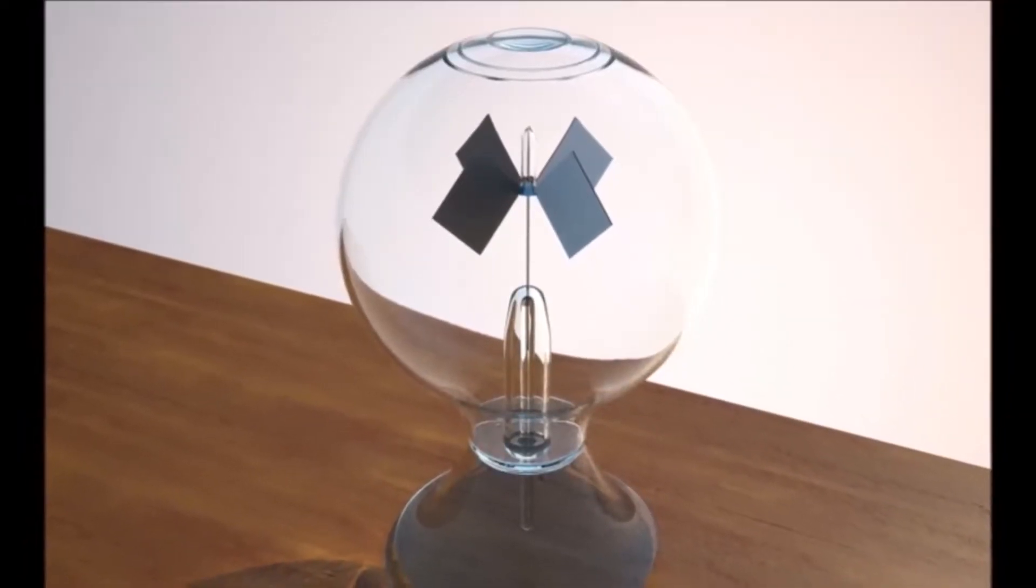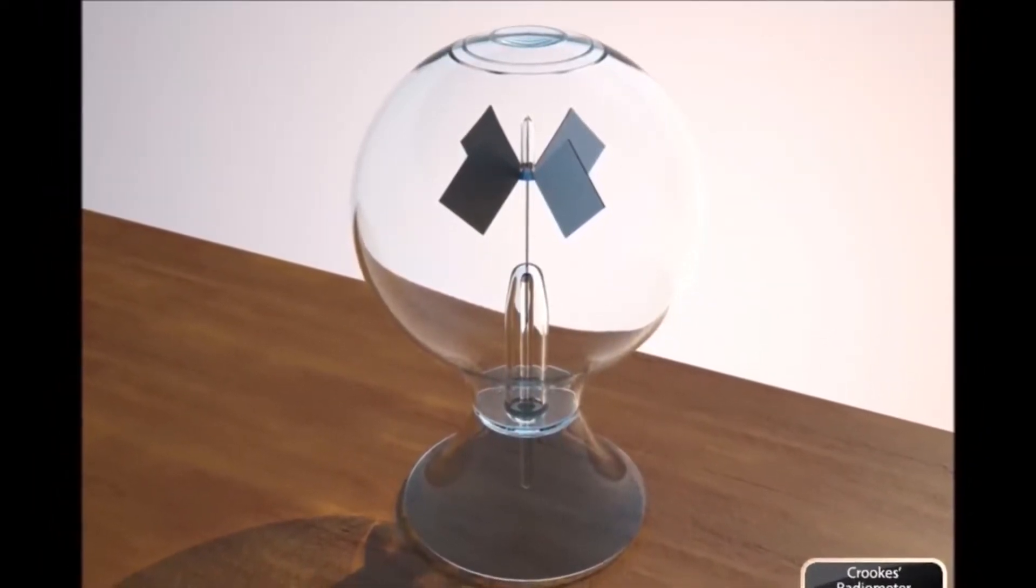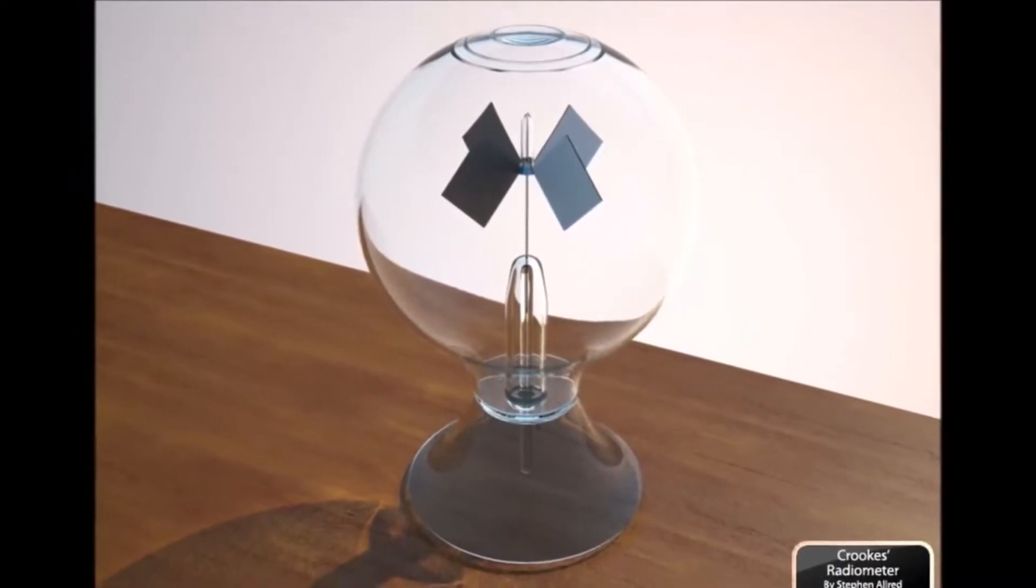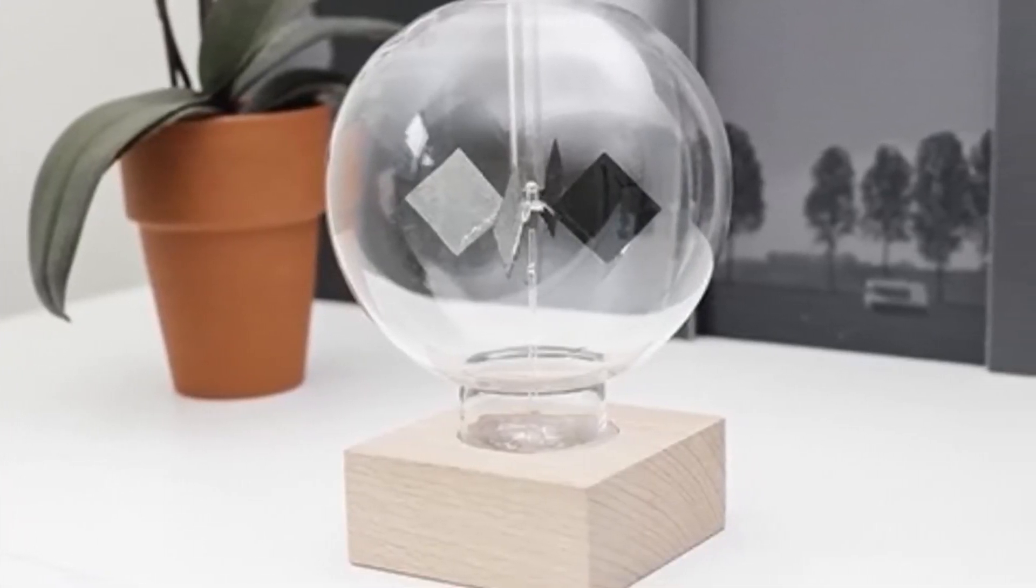But just to give you guys a brief description, inside of that glass bulb, it's a partial vacuum, meaning that there's very little air in there, almost none. And the air molecules that are in there, they're allowed to move freely and they want to balance themselves out amongst the area that they have in there.